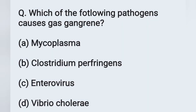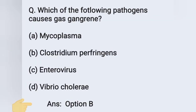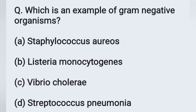The next question: Which of the following pathogens causes gas gangrene? Option A: Mycoplasma, option B: Clostridium perfringens, option C: Enterovirus, option D: Vibrio cholerae. Gas gangrene is due to the presence of Clostridium perfringens. Option B is the correct answer.